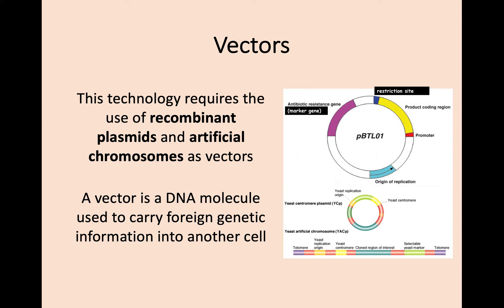One thing people often forget is what happens after genetic engineering: once you have the recombinant plasmid, you need to put it into a whole cell — it can't just float about doing nothing. That new genetic information gets put into a bacteria cell, which then takes it in, reproduces, and produces more. Before that stage, we need to talk about something called a vector — a DNA molecule used to carry foreign genetic information into another cell. In this case the plasmid is the vector, transporting this foreign genetic information into the cell.